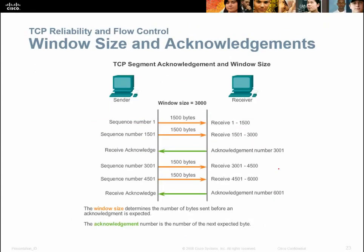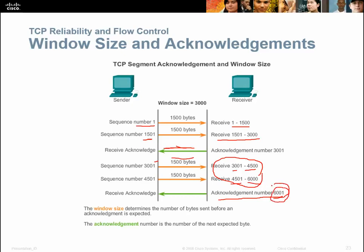When you have window size and acknowledgements, it works like this: sequence number 1 sends 1500 bytes, and the receiver acknowledges receipt of bytes 1 through 1500. Then sequence number 1501 sends the next chunk — 1501 through 3000 — and an acknowledgement confirms receipt. Then it sends 3001 to 4500, then 4501 to 6000, and the receiver sends an acknowledgement for 6001. It doesn't have to acknowledge every single packet — just 6001, which tells the sender that everything from 3001 to 6000 was received successfully, and the sender can then continue with 6001.